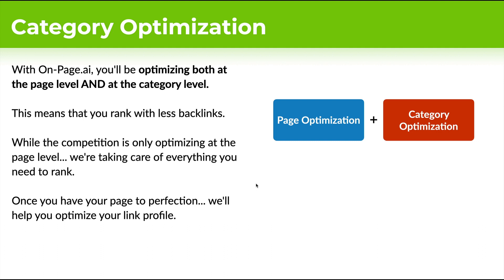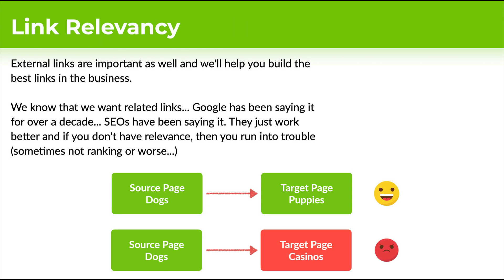Once your page is optimized to perfection, we don't stop there. We have more SEO tricks up our sleeve — we're going to help you optimize your link profile using artificial intelligence through something called link relevancy. Internal and external links are super important; backlinks are still important to rank, and we know that you want related links. Google has been saying that related links are important for over a decade, but up until now we haven't really had a scientific, measurable way of analyzing how relevant a link is to another page.